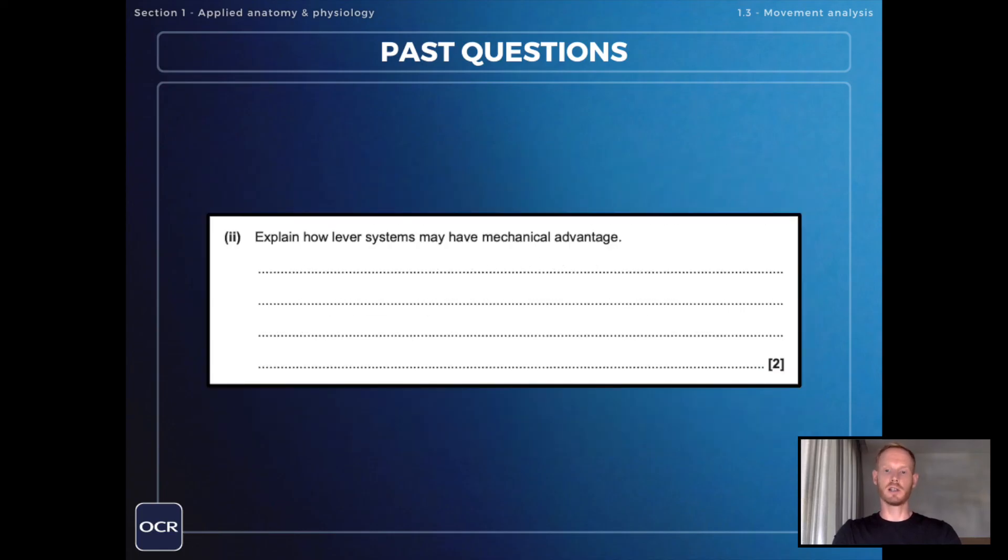Finally explain how lever systems may have mechanical advantage. All second-class levers have mechanical advantage and that this is the ability to move large loads with a smaller amount of effort.